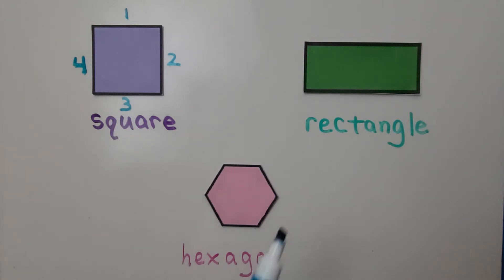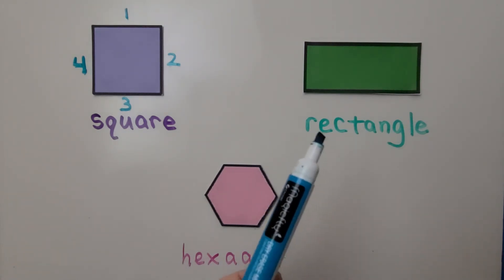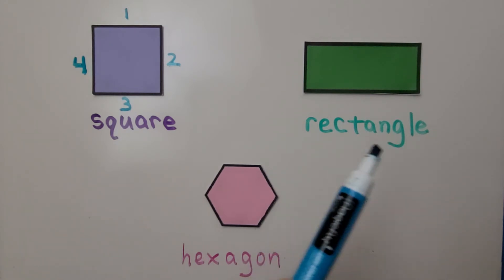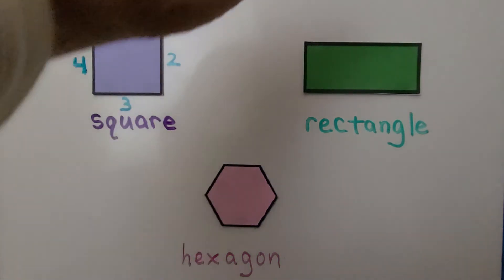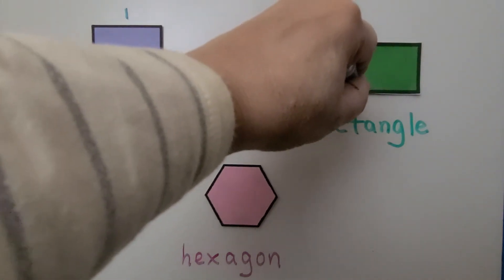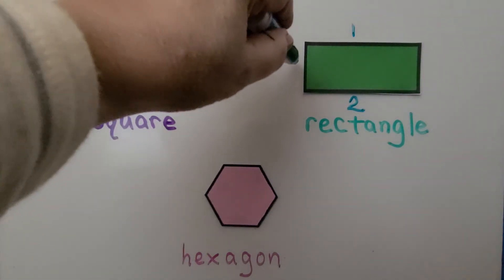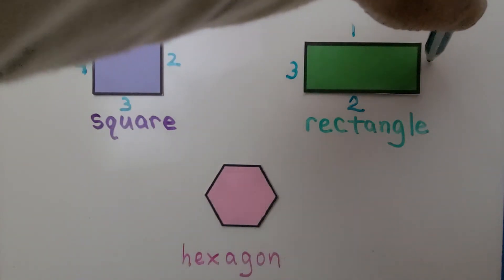Here's a rectangle. R-E-C-T-A-N-G-L-E. Rectangle. A rectangle also has four sides, but it has two sides that are long. And this is the third side and this is the fourth side — these sides are short.